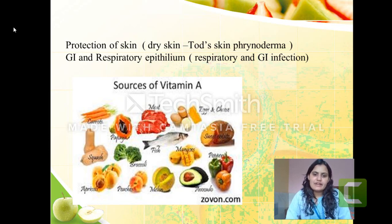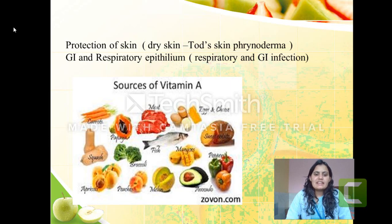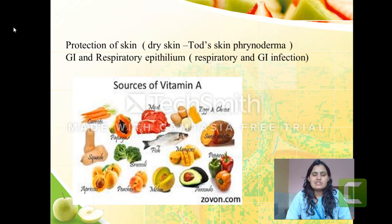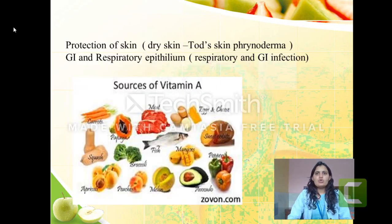Now, the sources of vitamin A. To prevent deficiency we should know the rich sources. Any fruit or vegetable having an orange or red colour — like carrots, apples, pomegranate, tomato — is a good source. Other rich sources include papaya, meat, eggs, cheese, fish, apricots, peaches, and melons.